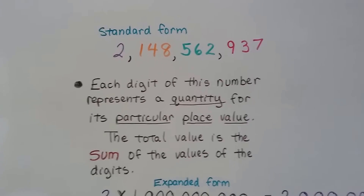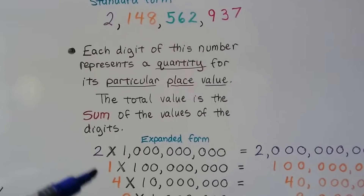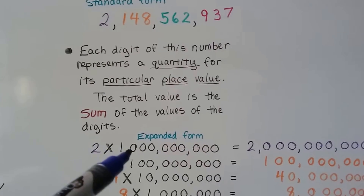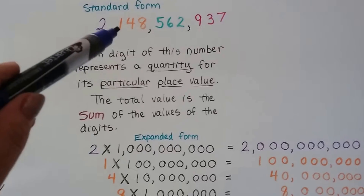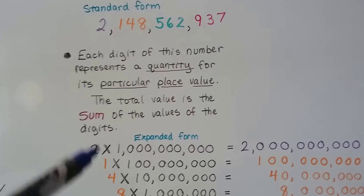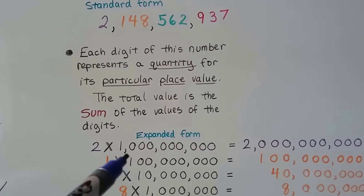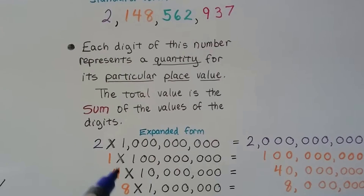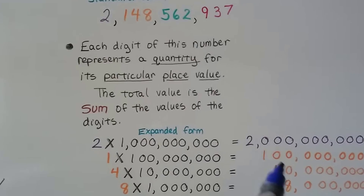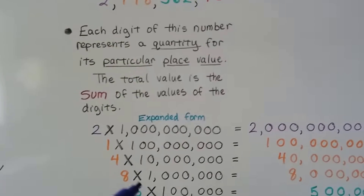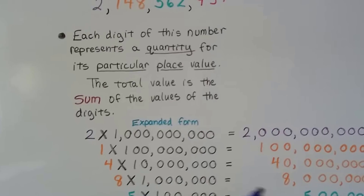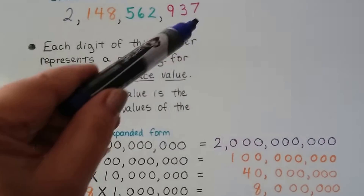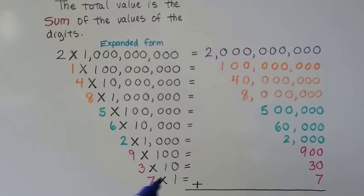Sum is the answer in addition. So there's 2 in the 1 billions place — 2 times 1 billion is 2 billion. There's a 1 in the 100 millions place — 1 times 100 million is 100 million. There's a 4 in the 10 millions place — 4 times 10 million is 40 million. There's an 8 in the 1 millions place — 8 times 1 million is 8 million. We can do that for every single place value going all the way down to the seven ones — seven times one.